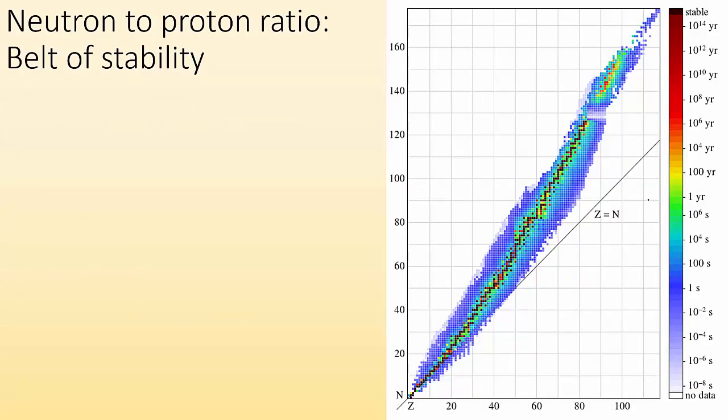So now we got this neutron-to-proton ratio. We call this the belt of stability. And if you take a look, the stable is the very, very dark red. You can kind of see in the middle right there we have a belt of stability. That's where the things are stable. For smaller nuclei, we have about a 1-to-1 ratio for neutrons to protons.